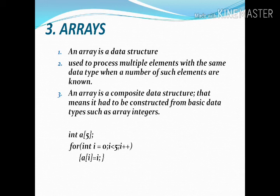In array a[5], to take values: for i = 0; i < 5; i++ — within that loop store a[i] — meaning a[0], a[1], a[2], a[3], a[4]. That way values are stored in the array. From a[0] to a[4] that means five values we can store in single variable integer a[5]. It is a composite data structure because it takes more than one value and is constructed from basic data types.